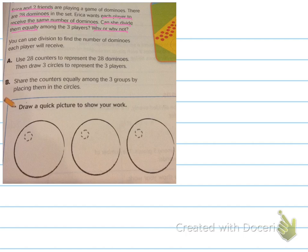You can use division to find the number of dominoes each player will receive. Use 28 counters to represent the 28 dominoes, then draw three circles to represent the three players. If our problem is 28 dominoes divided by three players, do you see that the counters represent your dividend and the three circles represent your divisor? Our quotient is going to be the number of counters inside those circles.